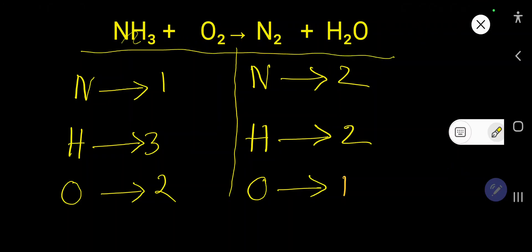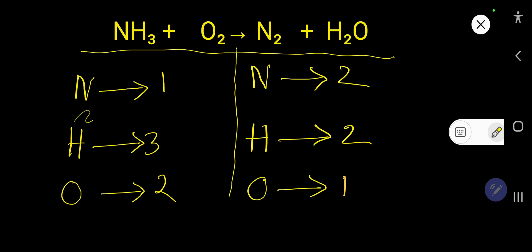How to balance NH₃ + O₂ → N₂ + H₂O. We will balance the atom first that is present in one compound. Every atom present in only one compound, so you can target any atom first. Here nitrogen appears once on the left and once on the right.